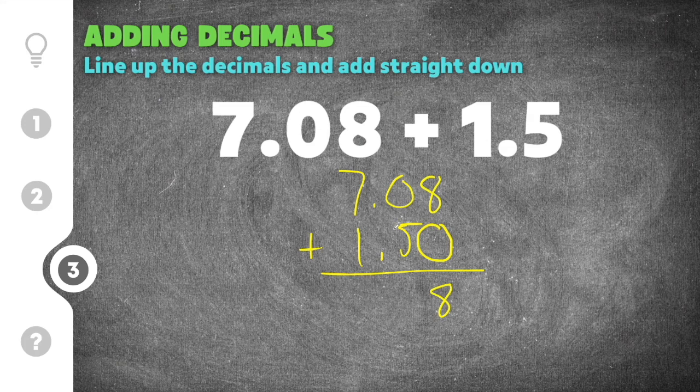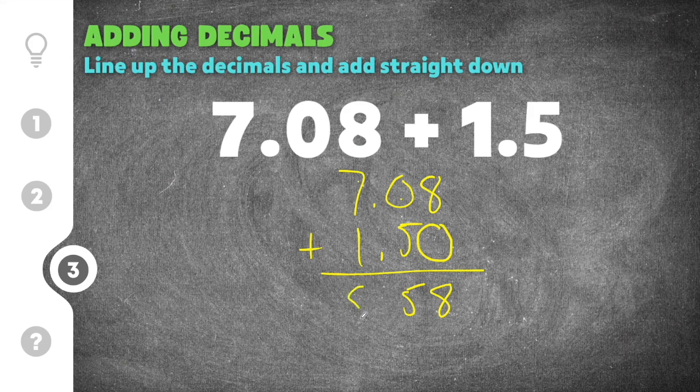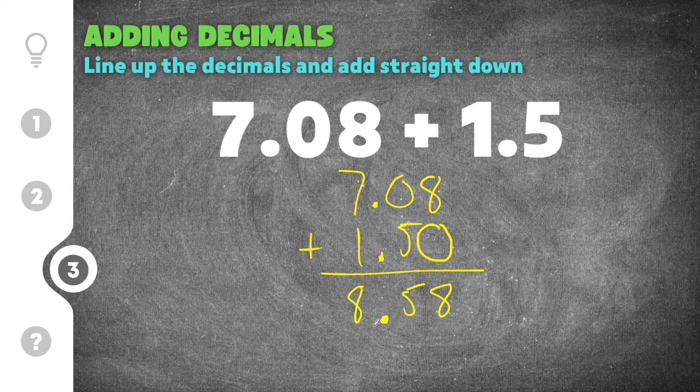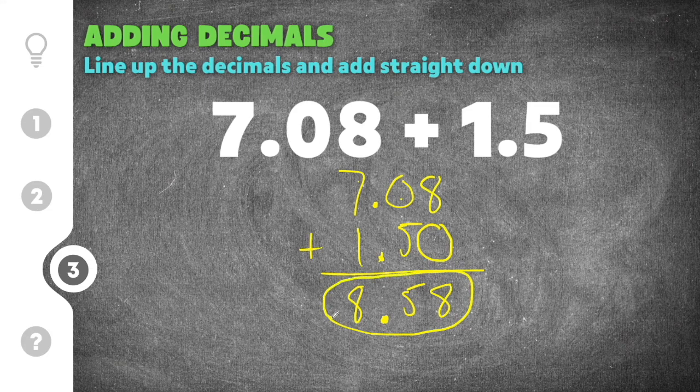And then moving on to our next one, 0 plus 5 is going to be 5. And then 7 plus 1, that's going to be 8 as well. And then we have our decimal point here and here, so it's going to move straight down vertically. And our final solution for this decimal addition problem is 8.58.